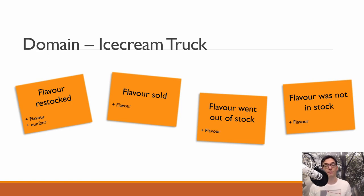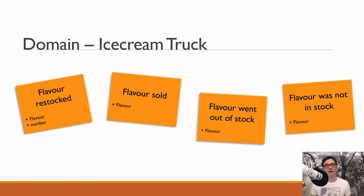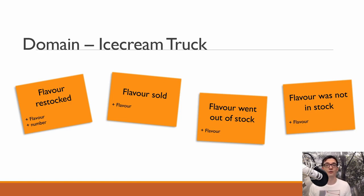The last event is a flavor was not in stock event. A lot of people don't use domain events for these kinds of events — they use exceptions, because someone wanted to buy an ice cream but couldn't because it wasn't in stock. But I think these kinds of domain errors are not an exception of the rule. They are expected business behavior, domain behavior, because we want to know if something was out of stock. So I think we need to model those error cases as well because they are important for our business.